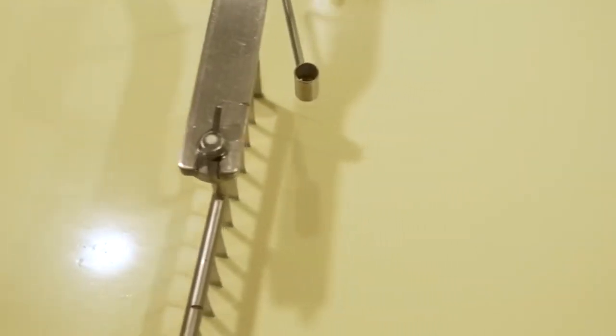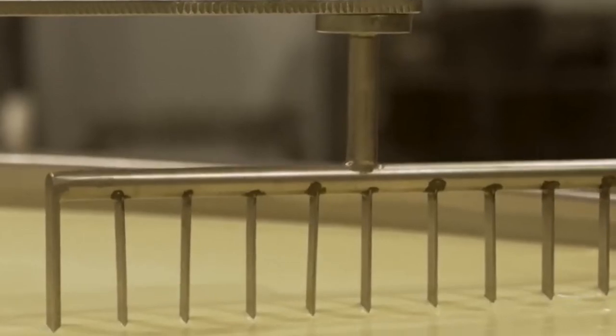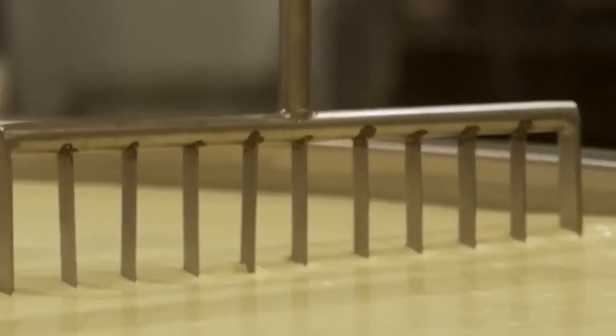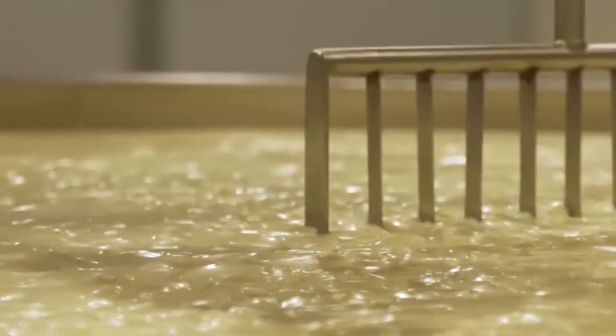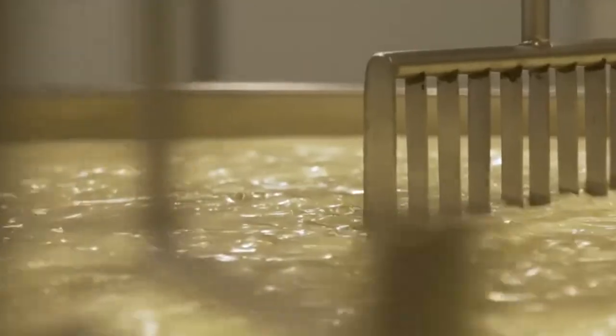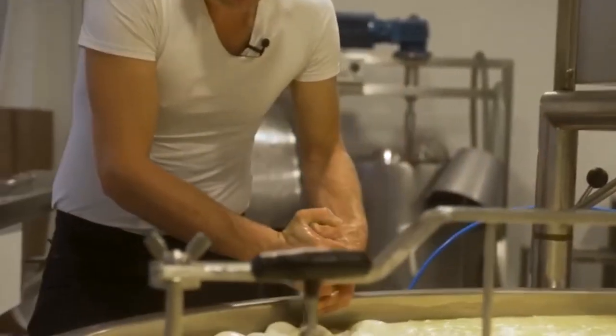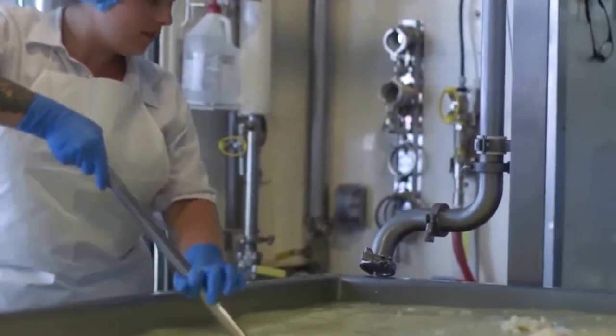Different cheeses use different types of bacteria. For example, cheddar uses one kind of bacteria, mozzarella uses a different kind. These starter cultures don't just help with curdling, they also add flavor and texture to the cheese. So the type of bacteria you use helps decide how the cheese will taste in the end.